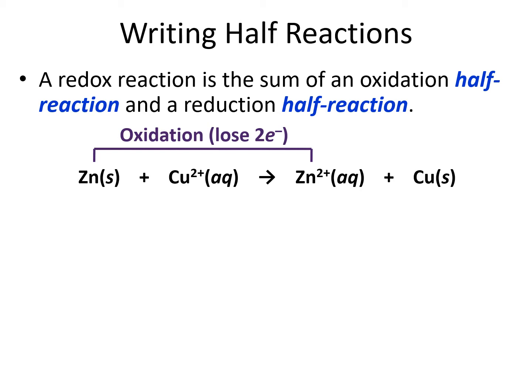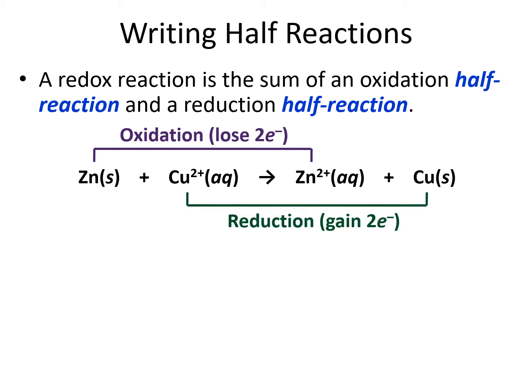The other half-reaction is with the copper. Copper is going from plus two to zero, so that's going to be a reduction half-reaction. It's gaining electrons to become neutral. It starts out as a plus two charge and then gains minus two from two electrons to make zero charge in its elemental form.